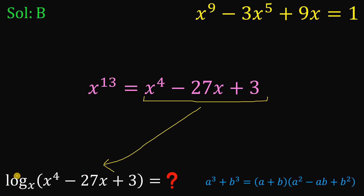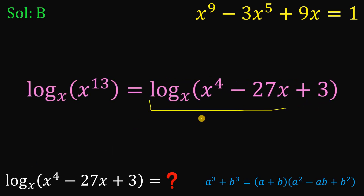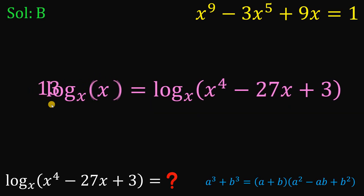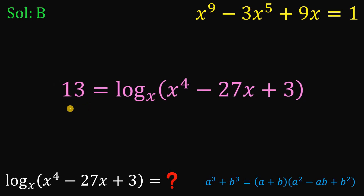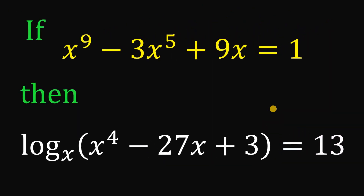Subtracting 27x from both sides, we have x raised to the fourth power minus 27x plus 3, which is exactly the expression inside our logarithm. Taking the logarithm of both sides to the base of x, the left side is the expression we want to evaluate, and the right side is logarithm of x raised to the power of 13 to the base of x. Using the laws of logarithms, we bring the exponent 13 to the front. Since logarithm of x to the base of x equals 1, the result is 13 times 1 equals 13. And we are done.